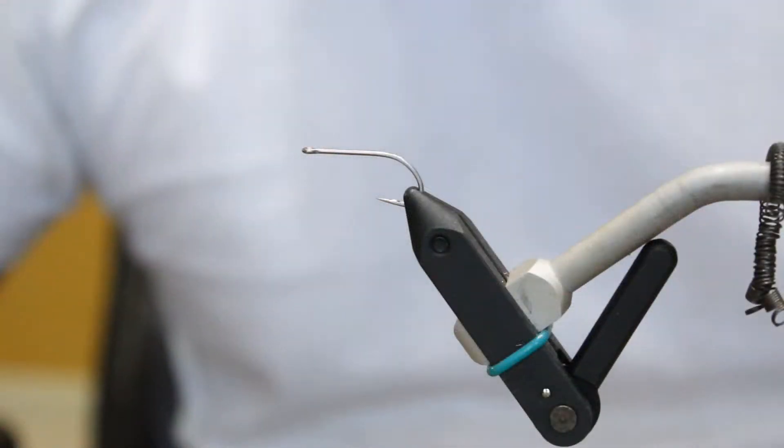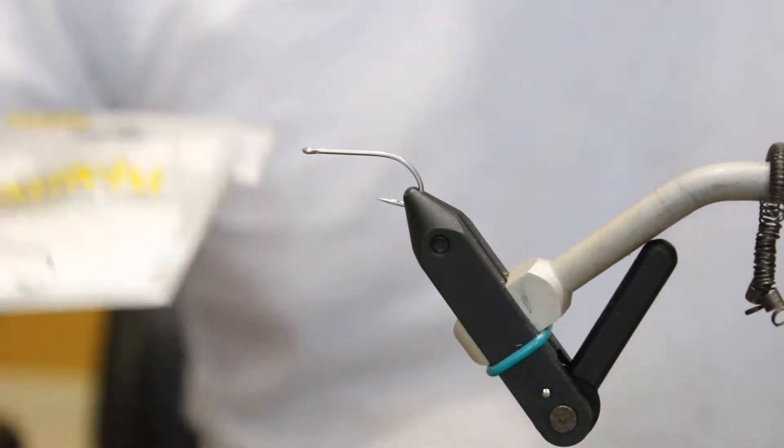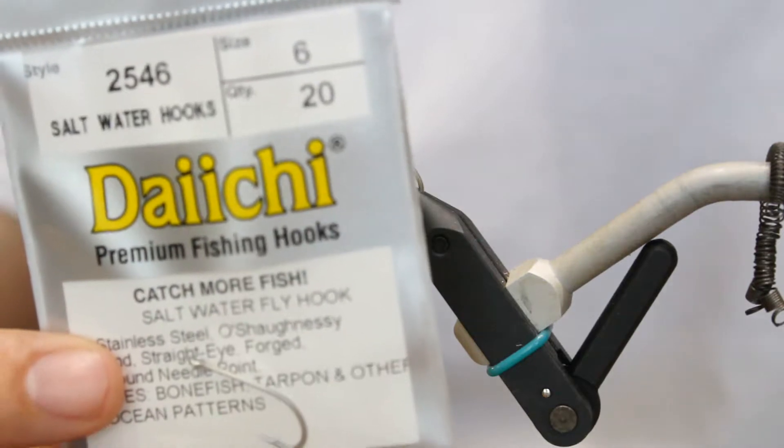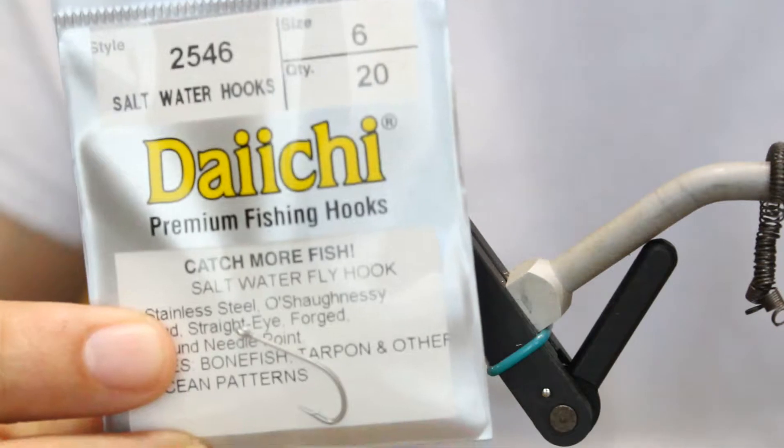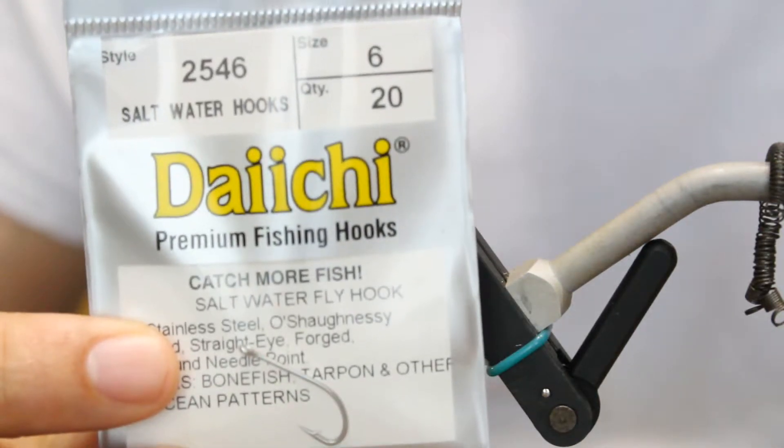Alright, welcome back. We're going to tie Crazy Charlie today. It's a very common bonefish fly. I've caught dozens upon dozens of bonefish in Belize on it. You can't go wrong. So you're gonna get your size 6 hook. You can go size 8 down to a size 10, it doesn't really matter. Bonefish are pretty small in Belize.